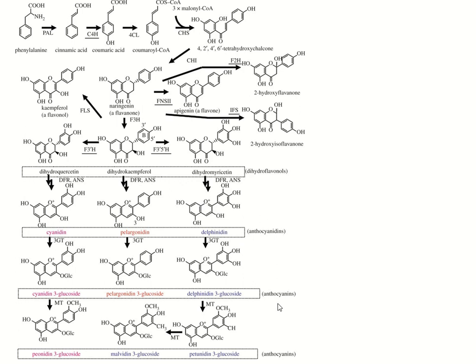Anthocyanidins to anthocyanins — structurally they are the same, but the enzyme required is 3-GT. This 3-GT adds glucosides. So cyanidine-3-glucoside, pelargonidine-3-glucoside, and delphinidin-3-glucoside are formed — these are called anthocyanins. Only the attachment of 3-glucoside differentiates them.